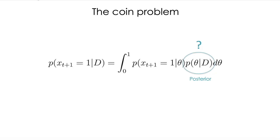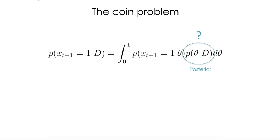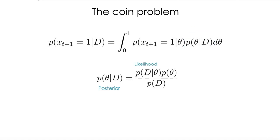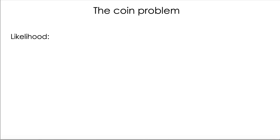Now, how do we calculate the posterior? We are going to use all the variational theory we saw before. We know that the formula for the posterior, applying Bayes' rule, is the likelihood times the prior divided by the marginal likelihood. Recall that at the end, all we care about is the probability of getting heads on the next flip — everything we are doing with the posterior involves internal calculations to make inference.